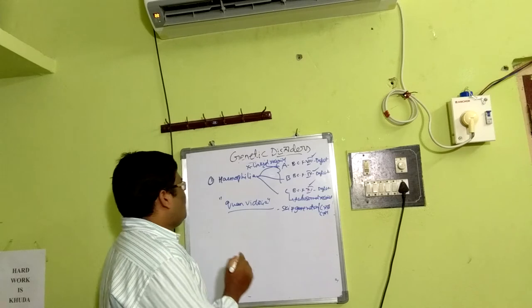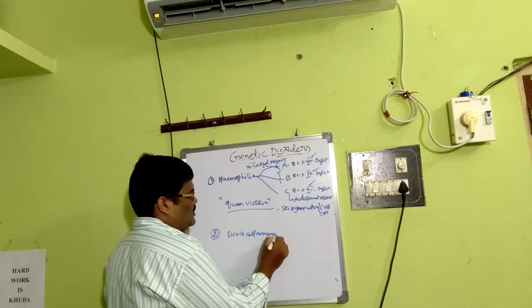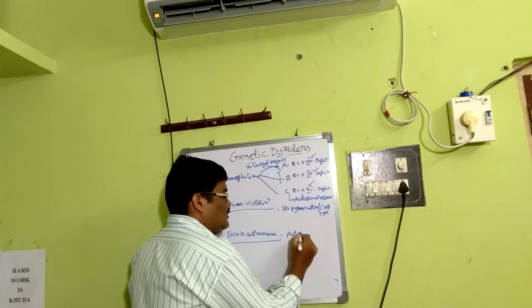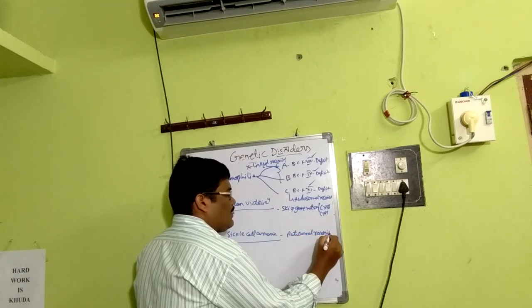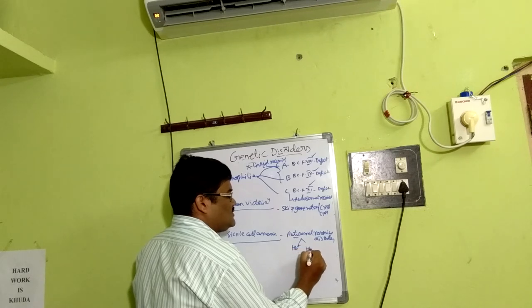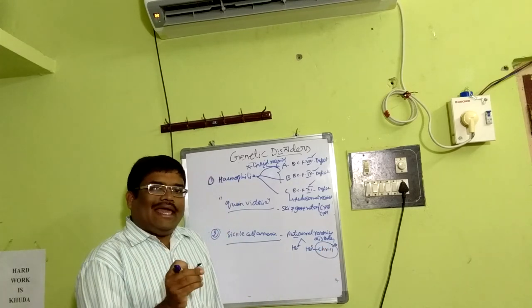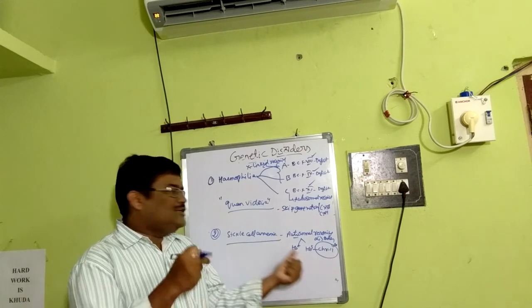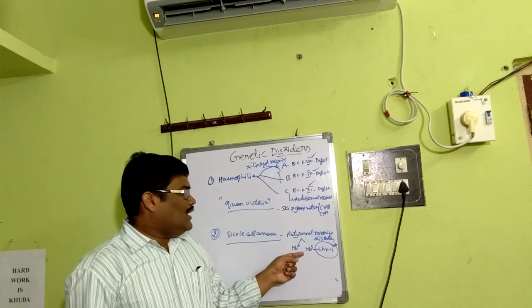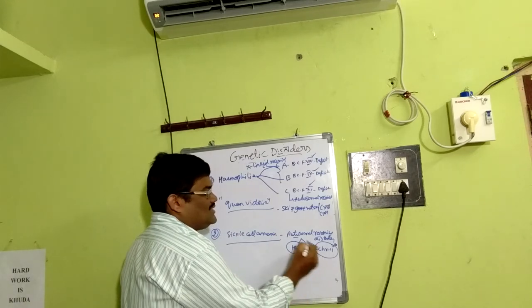Sickle cell anemia is also an autosomal recessive disorder involving a pair of alleles — HbA and HbS — associated with chromosome 11. Mutation in a gene on chromosome 11 leads to sickle cell anemia. Hemoglobin A is the normal hemoglobin found in healthy individuals; hemoglobin S causes red blood cells to become rigid and sickle-shaped.